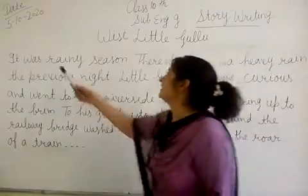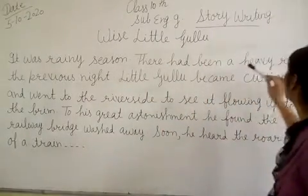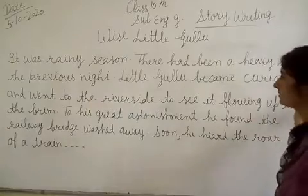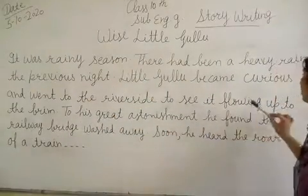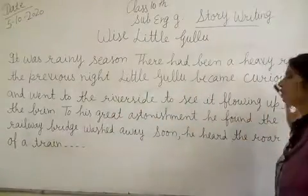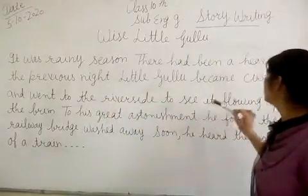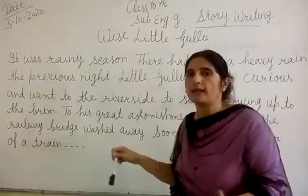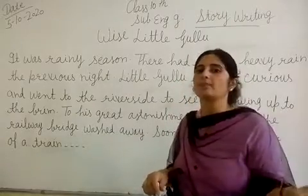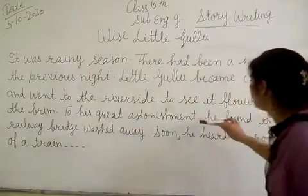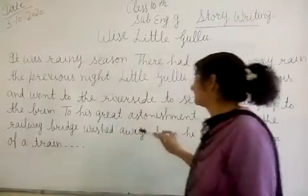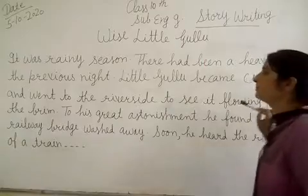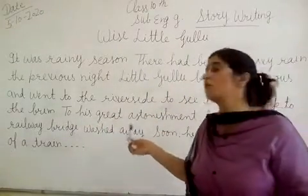Now we are going to start the story. It was rainy season. There had been a heavy rain the previous night. Little Gullu became curious and went to the riverside to see it flowing. To his great astonishment, he found the railway bridge washed away.